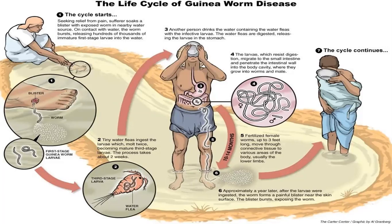The larvae get ingested into the stomach and under the digestive juices, the third-stage larvae will get released. These larvae resist digestion and migrate from the small intestine into the body cavity, where they will mature and grow in size, fertilizing and growing up to three feet long.